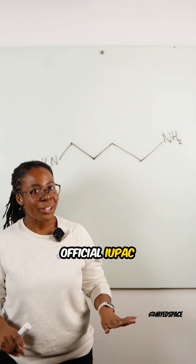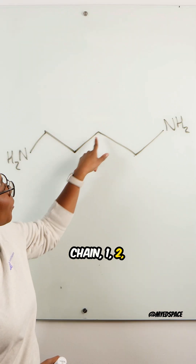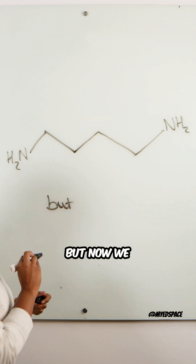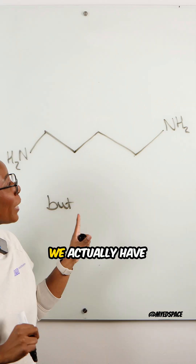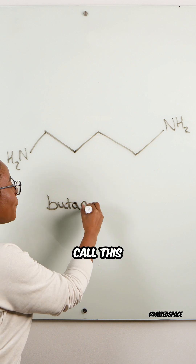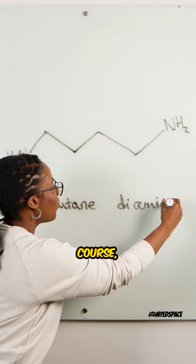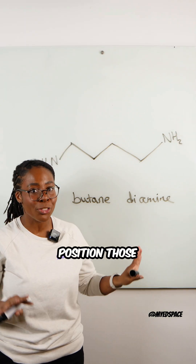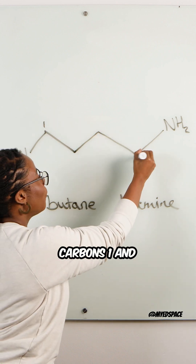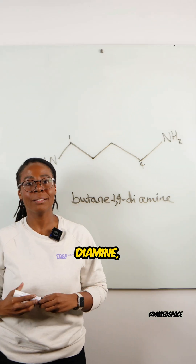So using the official IUPAC naming rules, we start of course with our longest carbon chain: one, two, three, four carbons, making this a 'but.' Now we look at our functional groups. We would call this butane-diamine. Not forgetting to position those amino groups — they are on carbons one and four, making this butane-1,4-diamine.